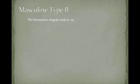And then let's take a look at type B. These are nouns where the nominative singular ends in -as. And the reason they end in -as is because the stem is going to end in epsilon, iota...